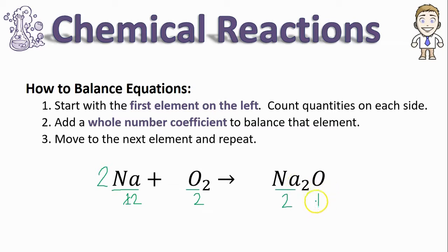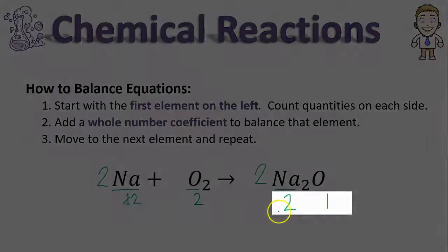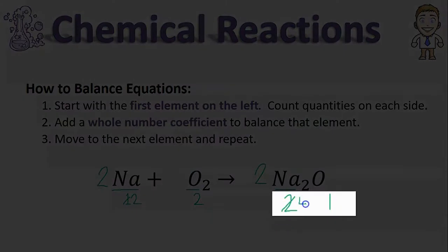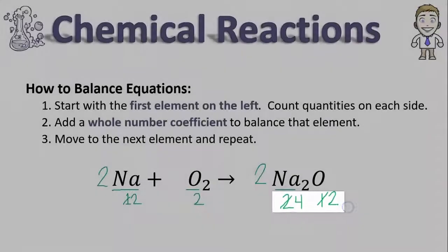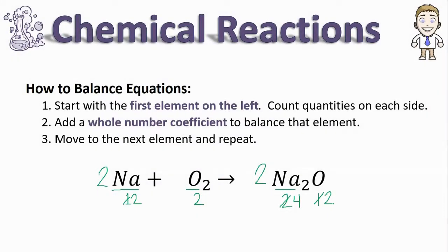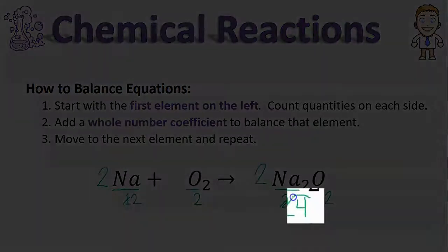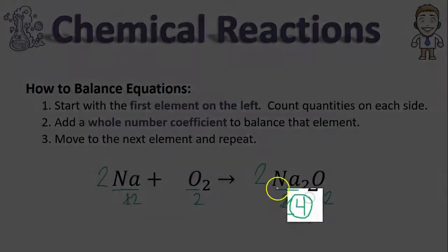I need to make the product side have two oxygens. A coefficient of two will double everything in this entire formula, so now there's not two sodiums, there's twice as many—four. And there's not one oxygen, there's twice as many—two. Now my oxygens are balanced, but this does present a problem.